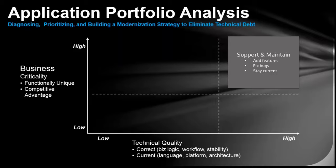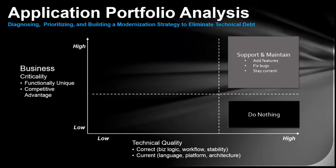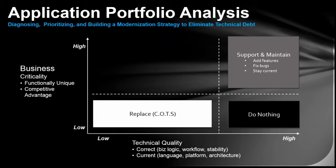High importance and high technical quality — these are applications you want to invest in, probably your more recent ones. Add features, fix bugs, keep them current. Applications in great shape technically but not offering a lot of unique value to the business — just let them run, but don't invest heavily if they're not offering competitive advantage. Applications that don't offer competitive advantage and aren't good technical quality are great candidates to be replaced with something off the shelf, such as Salesforce, Dynamics, SAP, or even Microsoft Office with Excel macros.